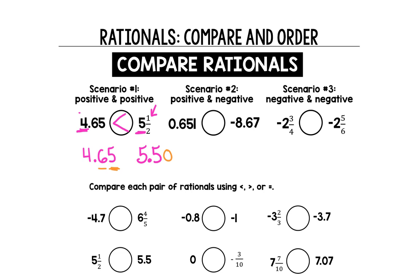So the next scenario, a positive and a negative. We know that a positive is always going to be bigger than a negative, so this is greater than. But again, we want to make sure that we're bringing our place values out to the same number of decimals. Because this is three decimals, we want this one to be three decimals as well.